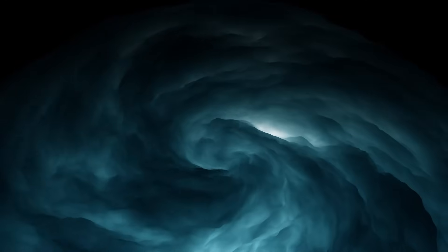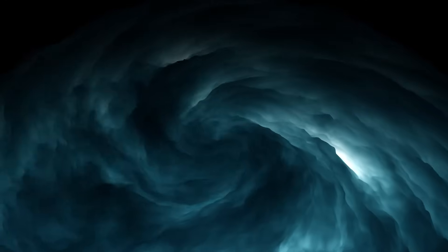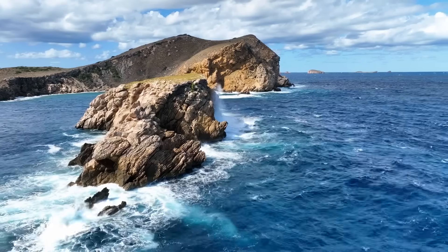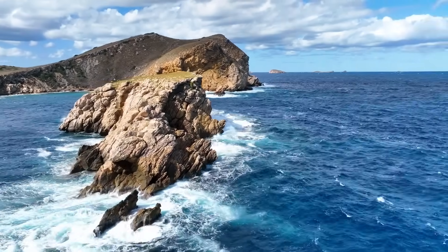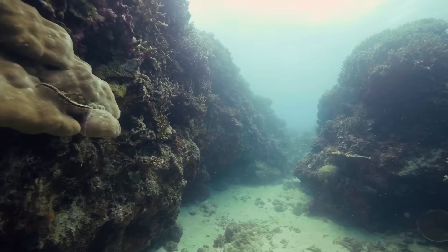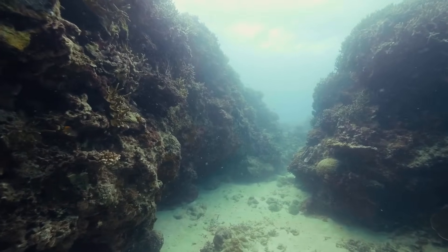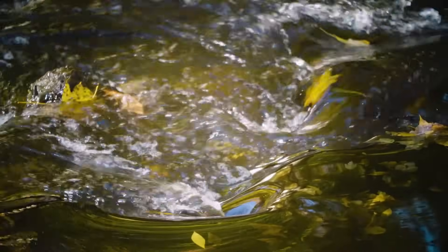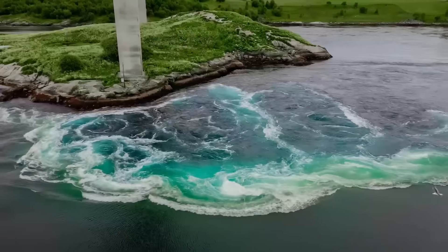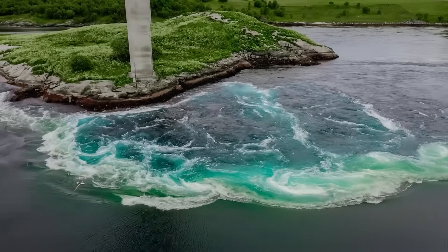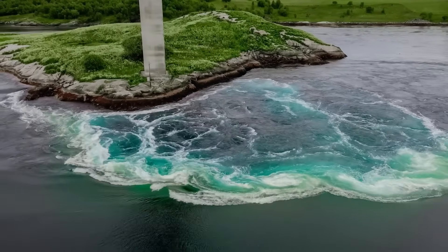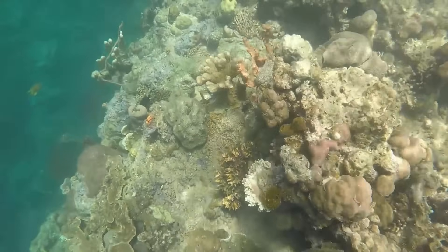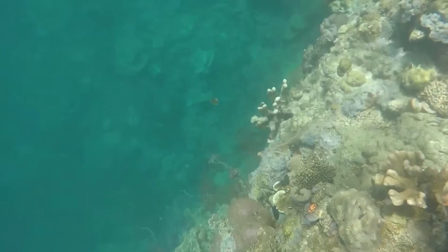Now you know that whirlpools form by different water currents meeting, but what if there could be other causes as well? Some other reasons a whirlpool might occur are because of the shape of the coastline, the underwater geography, and how fast the water is flowing. When water currents collide or flow into narrow or uneven areas, they can start spinning, creating a whirlpool. The shape of the coastline can direct water so it swirls around, especially if it hits a curve or jagged part of the land. Underwater features like ridges, holes, and slopes can also disrupt the flow of water, forcing it to move in a spiral.